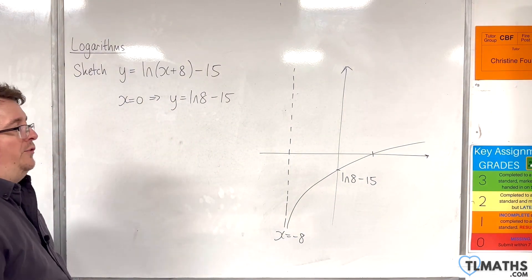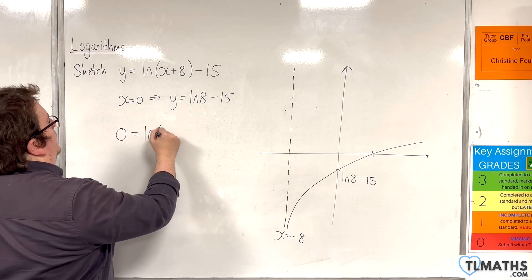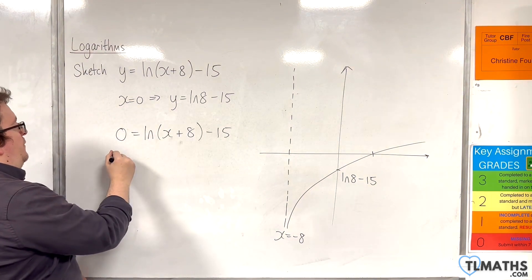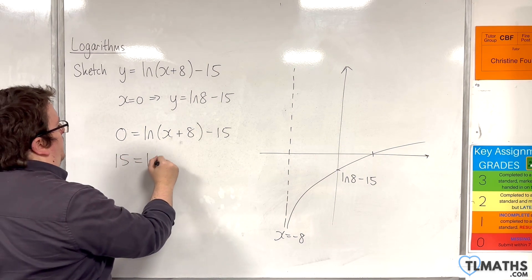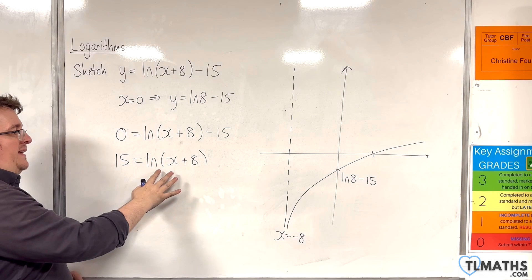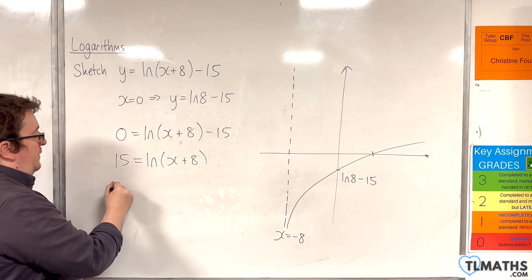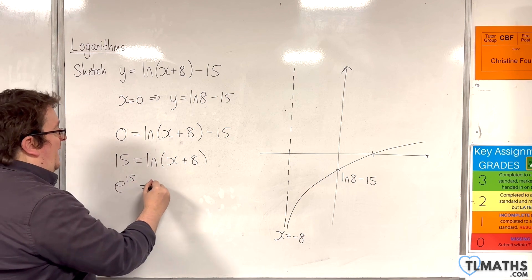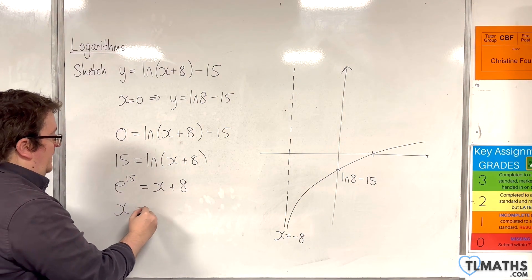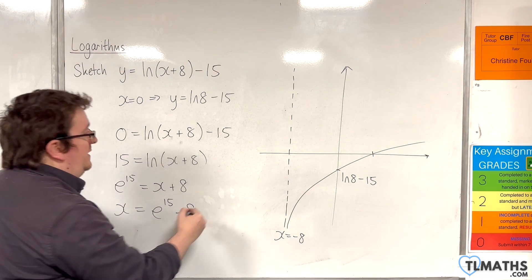And now, where is it crossing the x-axis? That's when y is 0. Add the 15 to both sides. Going from logarithmic to exponential form — this is log base e, remember — so e to the 15 will equal x plus 8. Subtracting 8 from both sides, we have x equals e to the 15, take away 8. And that is the exact point at which the curve crosses the x-axis.